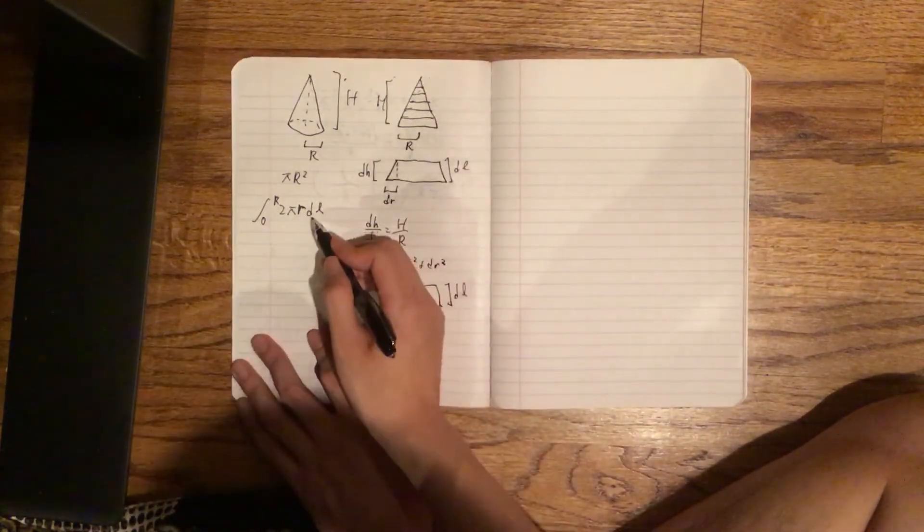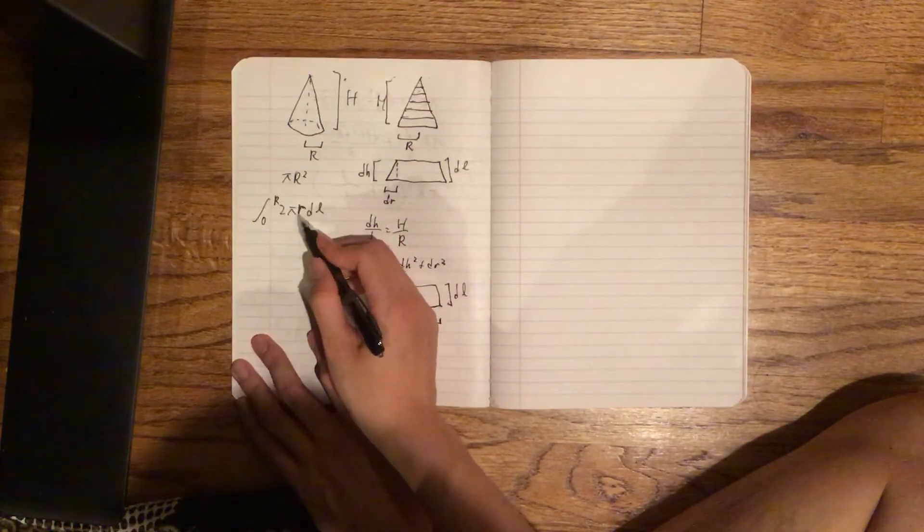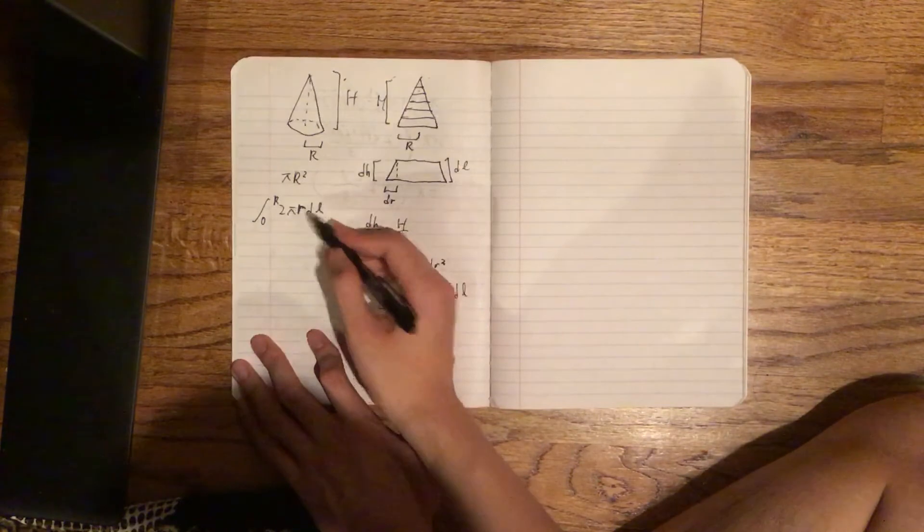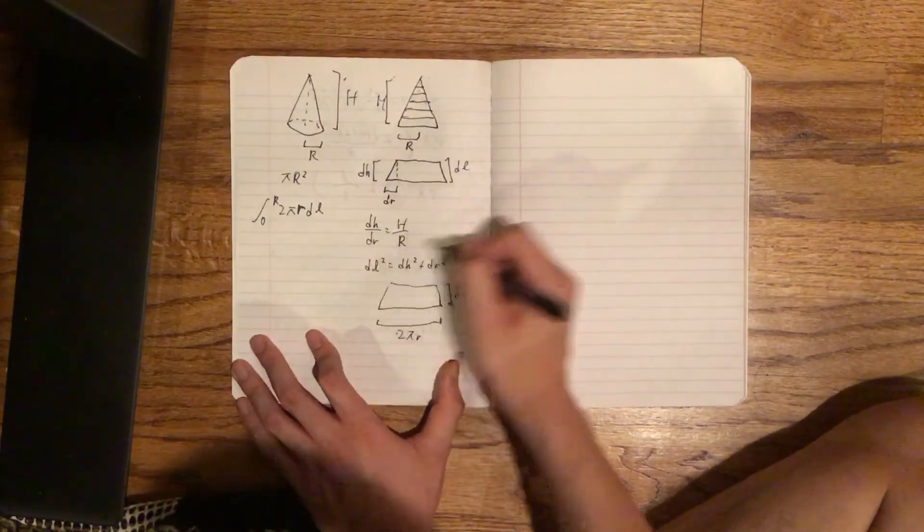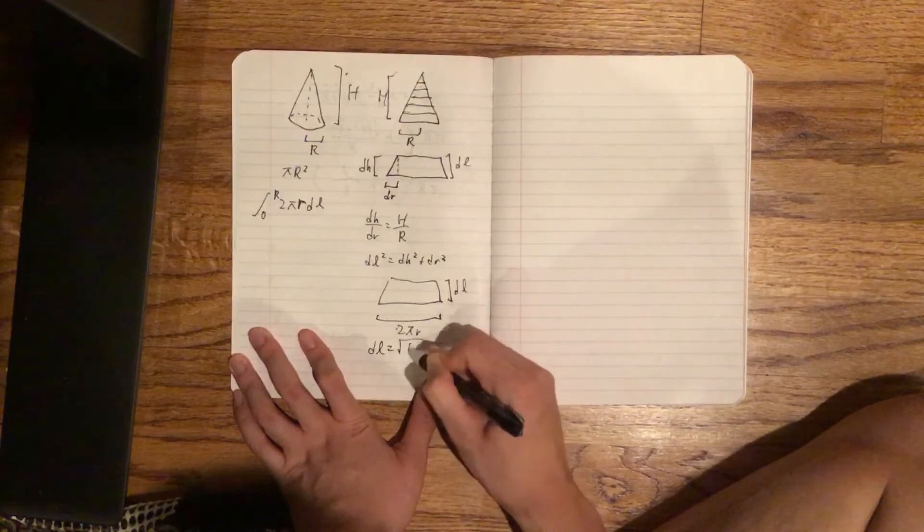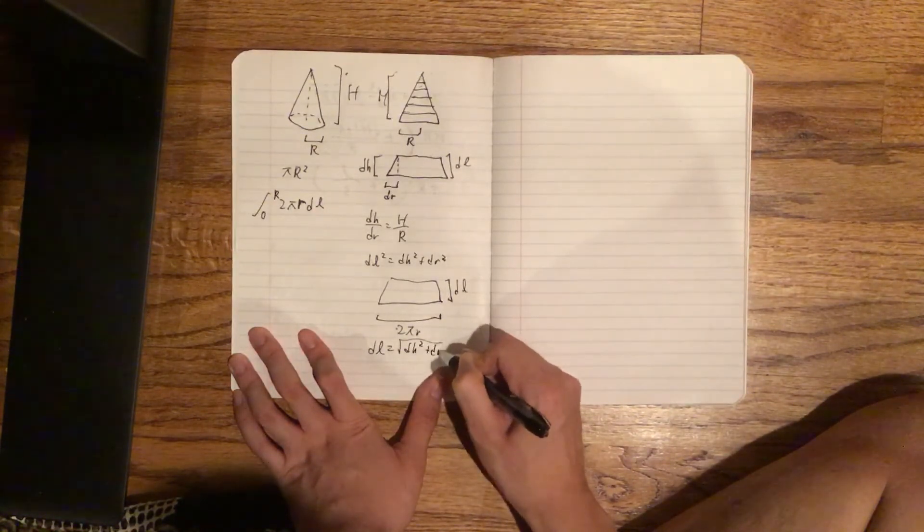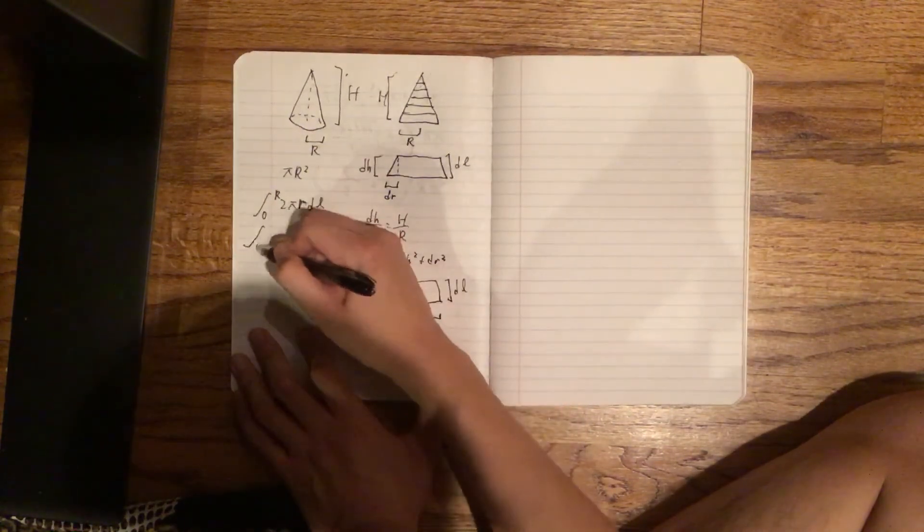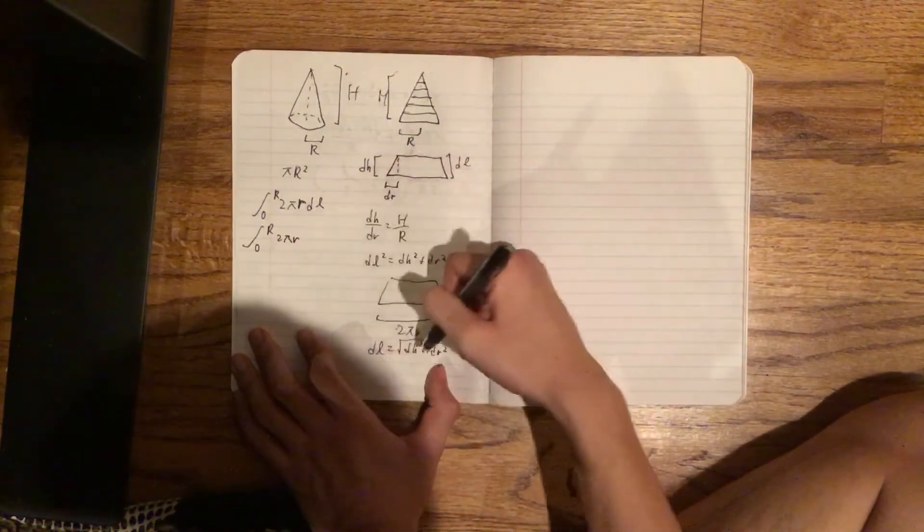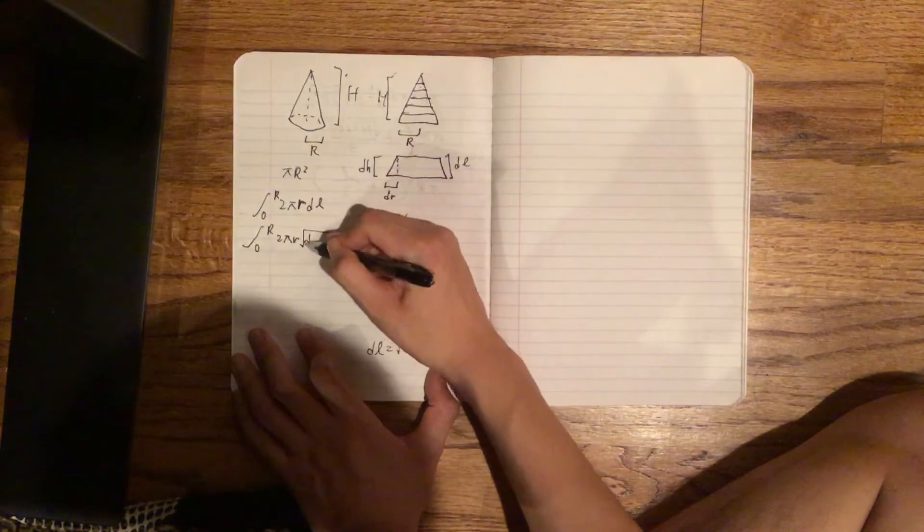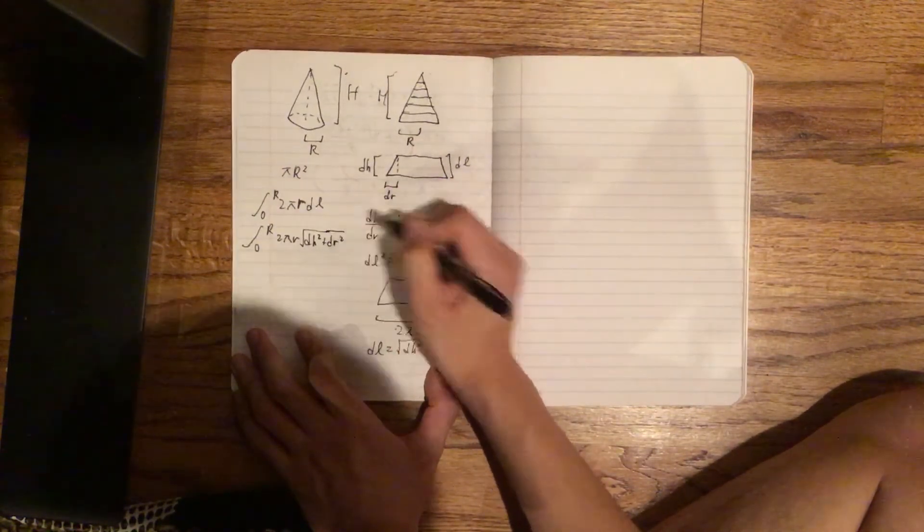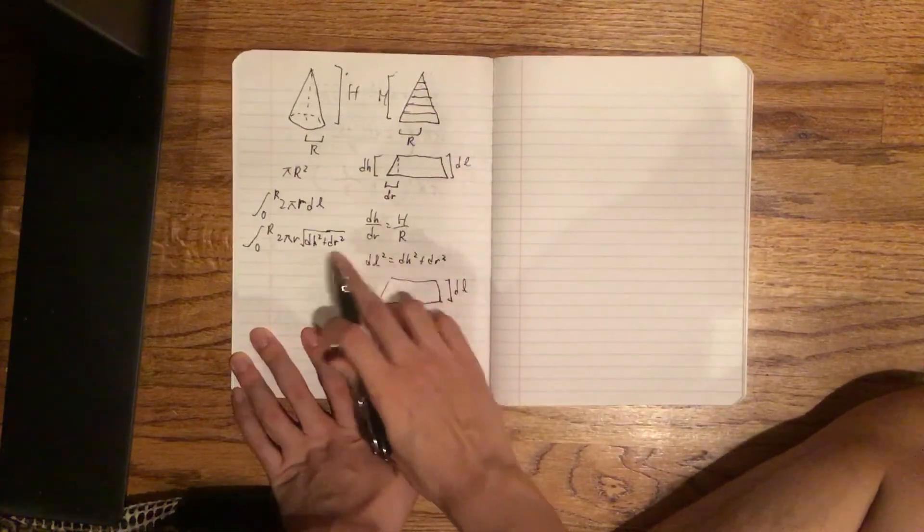But here's the problem. We have an r and a dl and these are two different variables. So luckily we have this formula where dl = √(dh² + dr²). So from 0 to r, we get 2πr√(dh² + dr²). But we still can't integrate. This is a pretty weird thing to integrate. So let's take out this dr here.